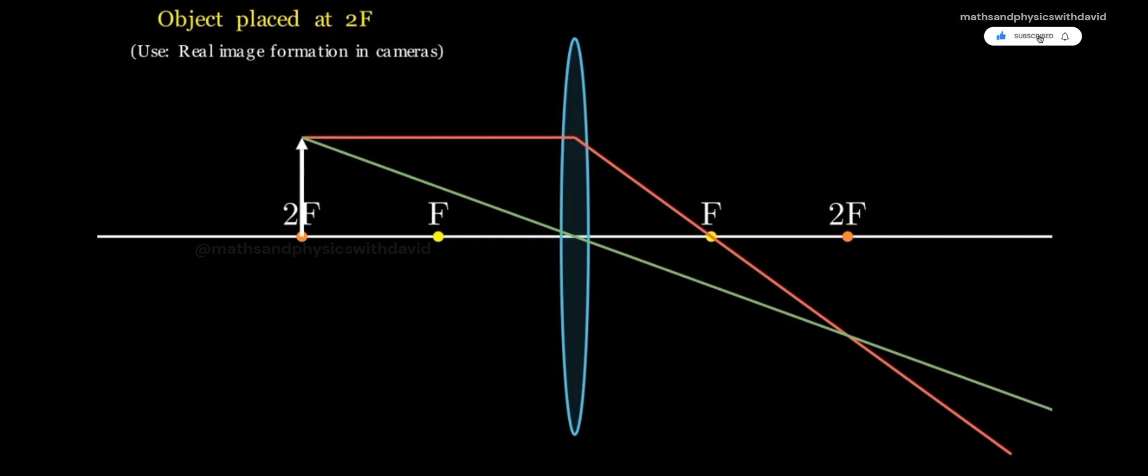This time, both rays meet exactly on 2F on the other side. The image is real, inverted, and exactly the same size as the object.